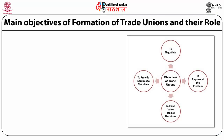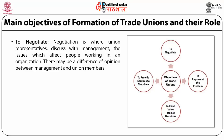Main objectives of formation of trade unions and their role. The primary function of trade unions is to protect the interest of workers against discrimination and unfair labor practices. Trade unions are formed to achieve the following objectives. First, to negotiate. Negotiation is where union representatives discuss with management the issues which affect people working in an organization. There may be a difference of opinion between management and union members.